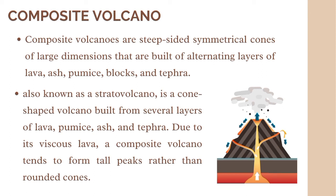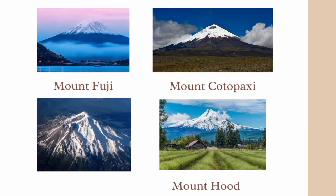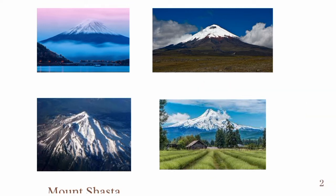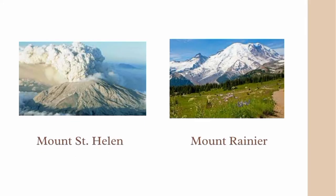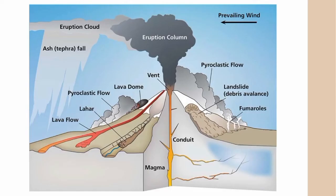Some layers are of lava while others might be ash, rock, and more. Examples of composite volcanoes include Mount Fuji in Japan, Mount Cotopaxi in Ecuador, Mount Shasta in California, Mount Hood in Oregon, Mount St. Helens, and Mount Rainier in Washington. This is what the anatomy of a composite volcano looks like.